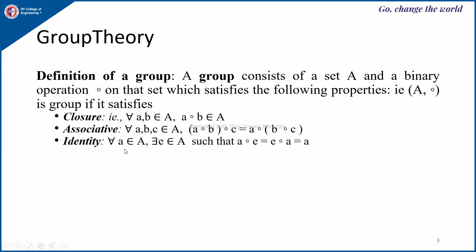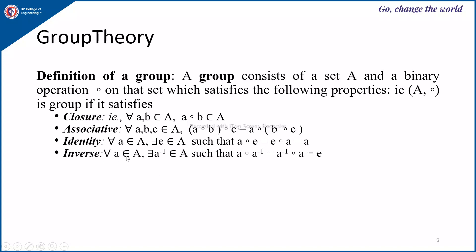Next, identity: for a belonging to A, there exists e belonging to A such that a composition e equals e composition a equals a. Next, inverse: for all a belonging to A, there exists a-inverse belonging to A such that a composition a-inverse equals a-inverse composition a equals e.